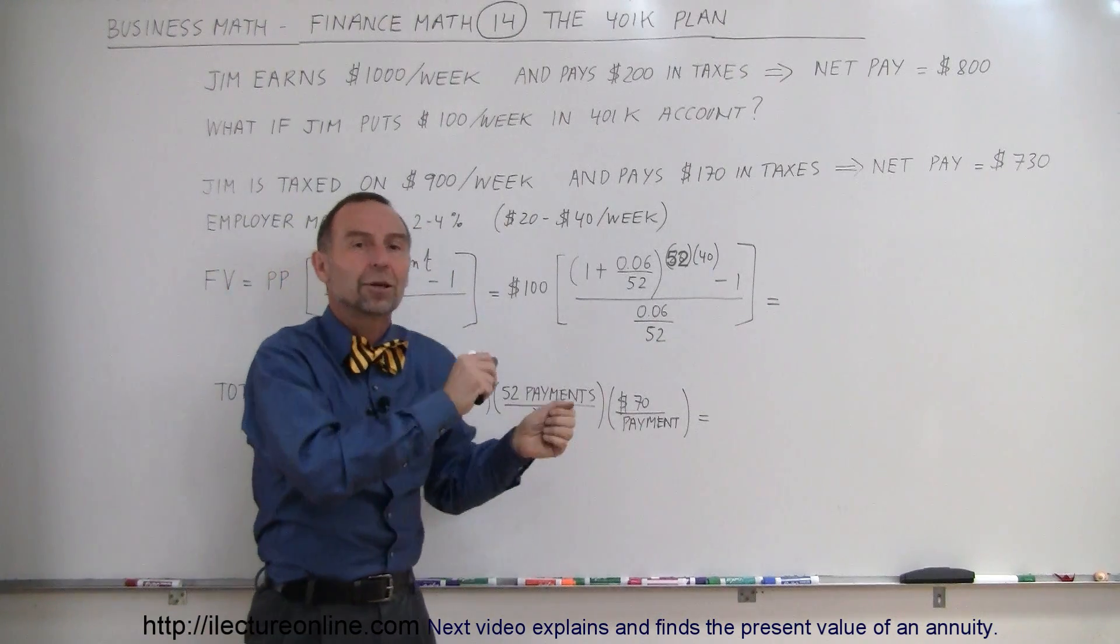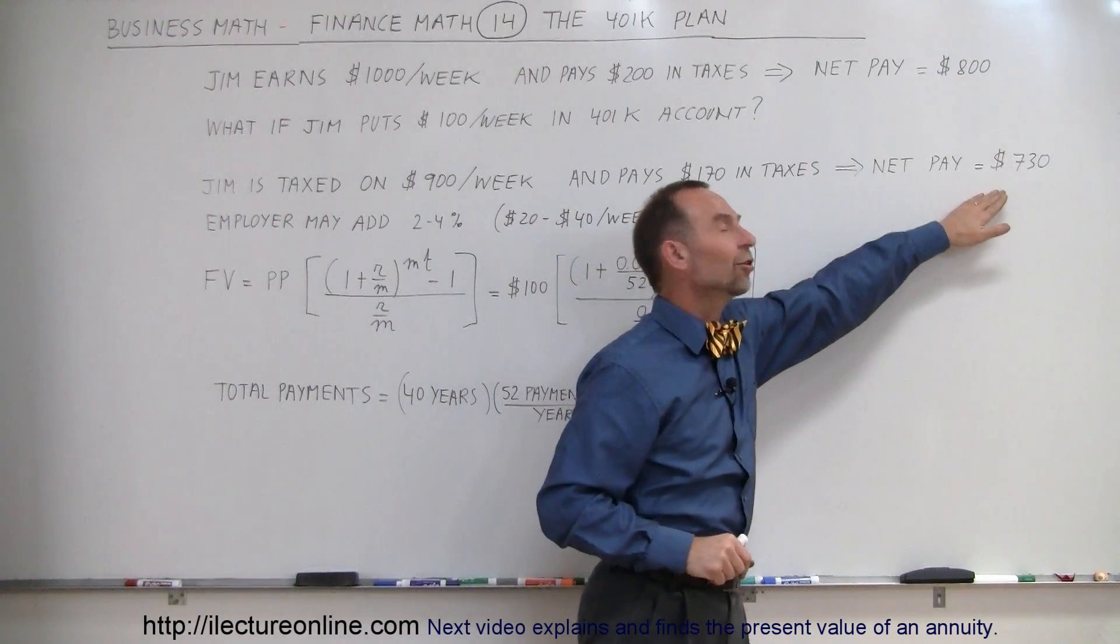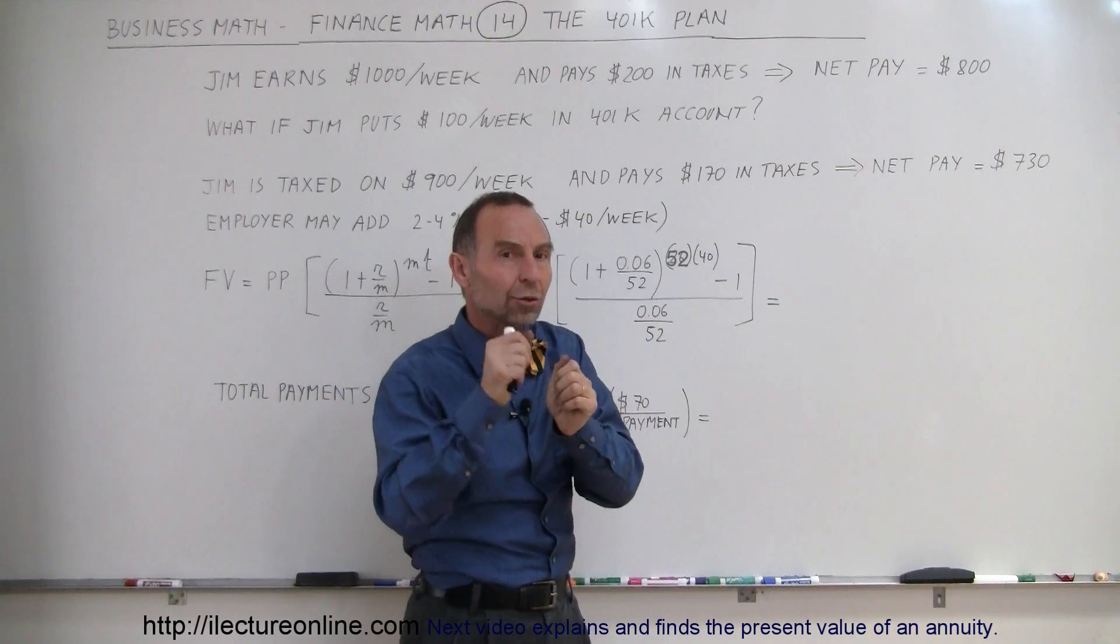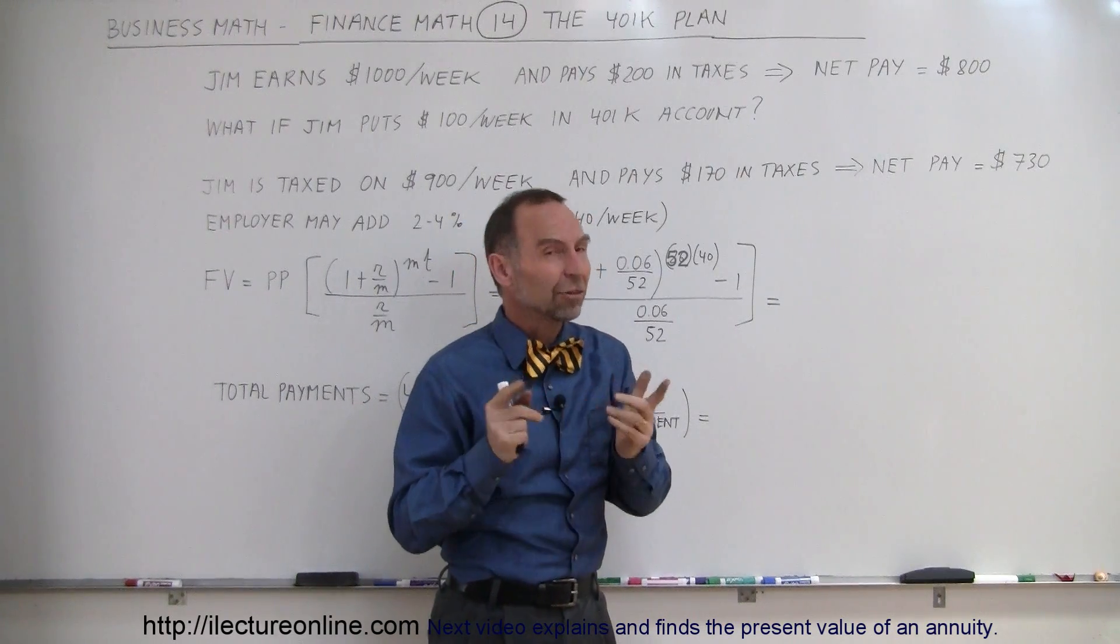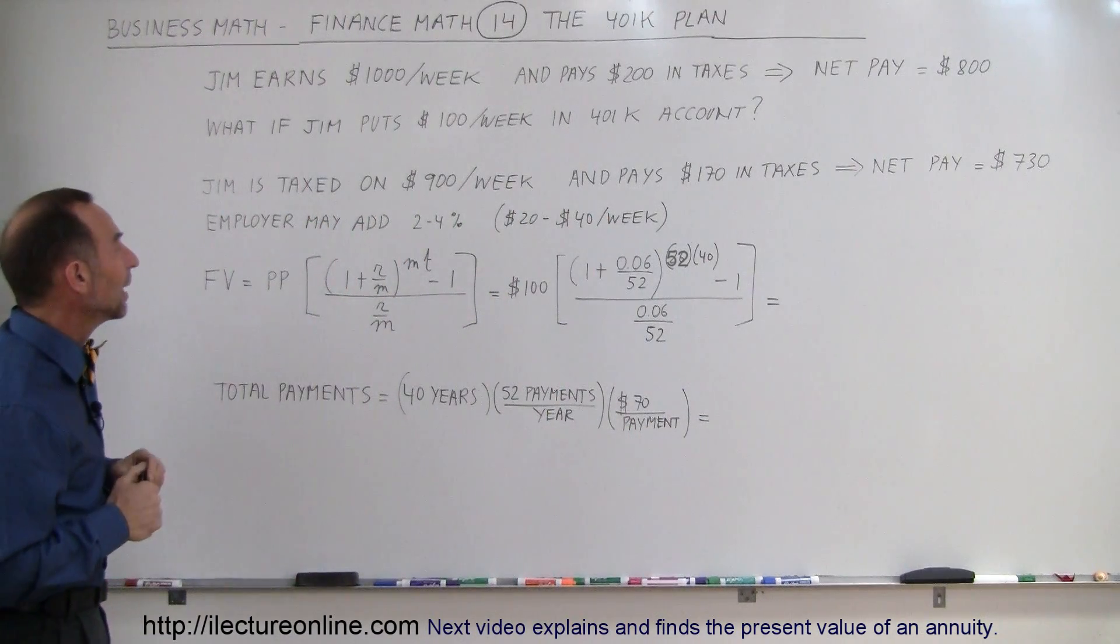Now, these numbers are not exact numbers, but they're just representative numbers. So, now let's say his take-home pay is $730 per week. So, by taking $100 and putting into a savings account, he takes home $70 less. That's a pretty good deal. So, you save $100 and you get only $70 less in your net pay.